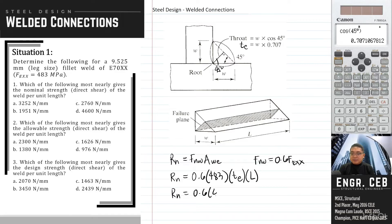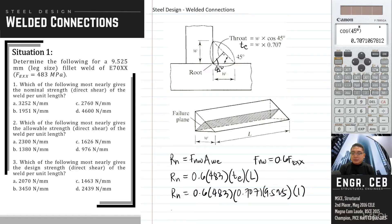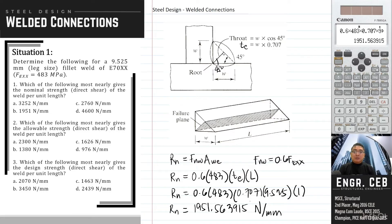For this particular problem, the throat thickness is 0.707 times the given leg size W of 9.525 mm. We are asked to solve for the strength per unit length, meaning we consider a 1 mm length of the weld. Therefore, R_N equals 1951.563915 N per mm. This is the nominal strength of the weld per unit length, and the answer is letter D.